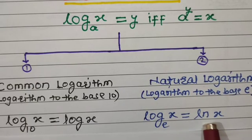Rule number 4 is the change of base rule: the logarithm of m to the base b can be rewritten by changing the base to a new base a. It equals the logarithm of m to the base a, divided by the logarithm of b to the base a. In this way, you can change the base of a logarithm.